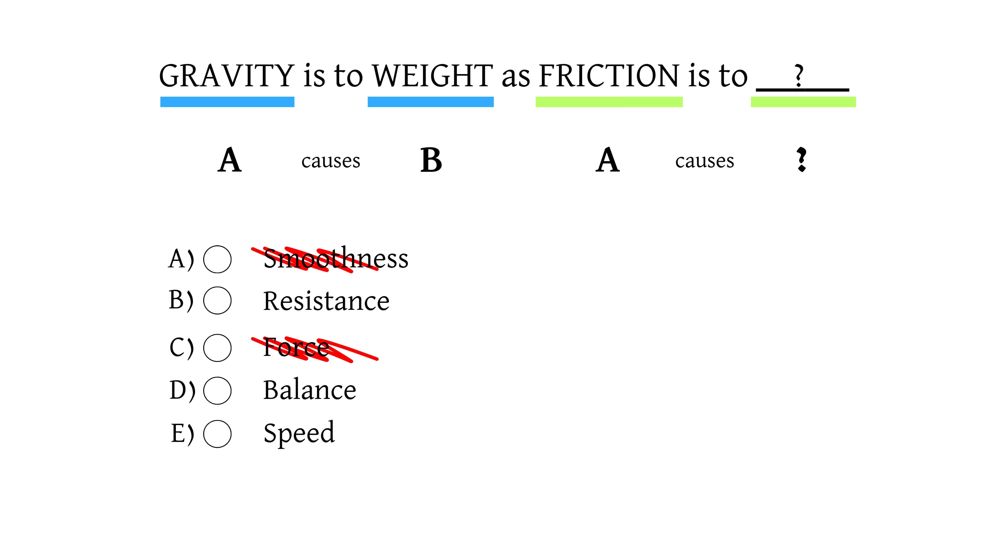Option D is balance and friction doesn't directly cause balance. So we can eliminate this option.